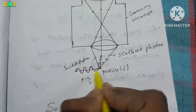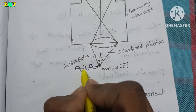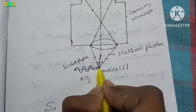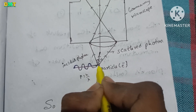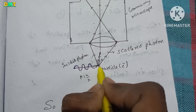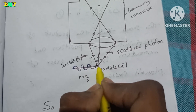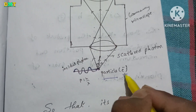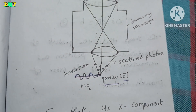This photon is the incident particle. The particle is the electron — electron is E minus.